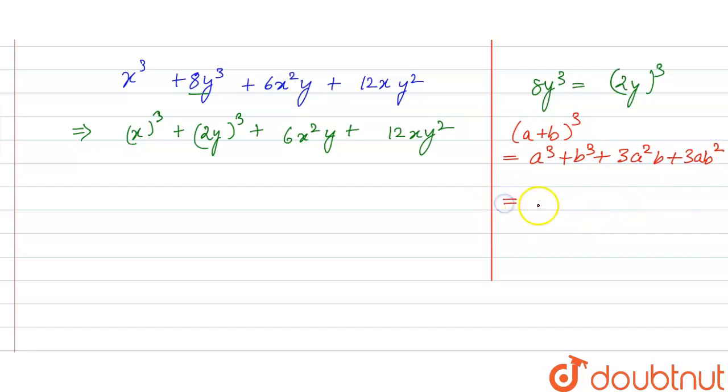So this identity can also be written as a cube plus b cube plus 3ab into a plus b.